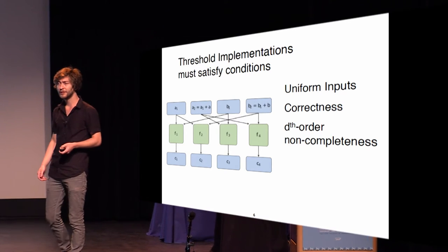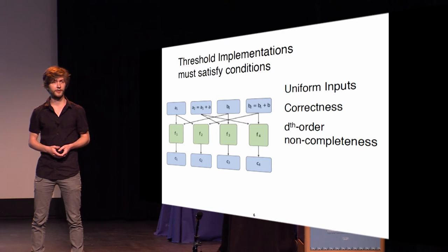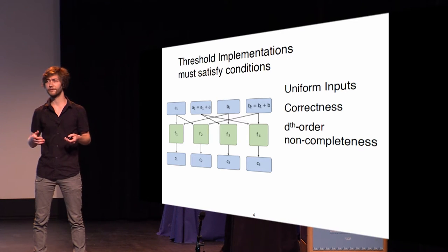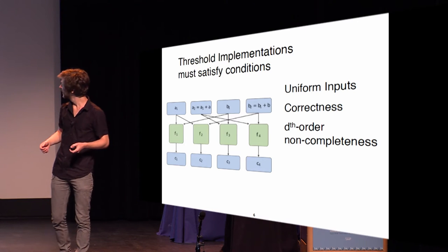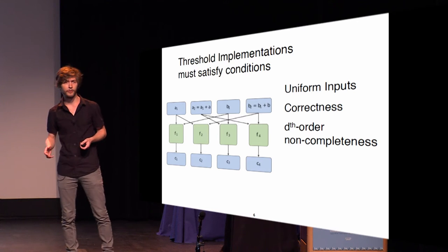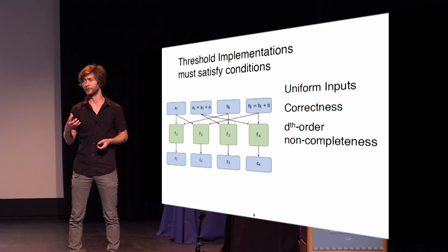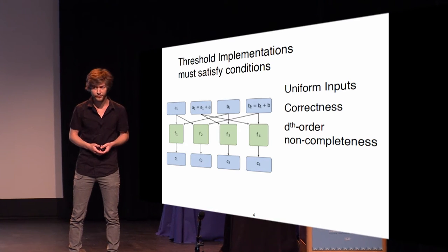Specific to threshold implementations is D-th order non-completeness. That means if you observe D wires or D sub-circuits, you should not be able to observe all D plus one values. This is where the security in the glitchy setting really comes from.